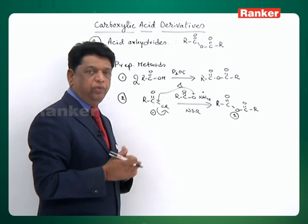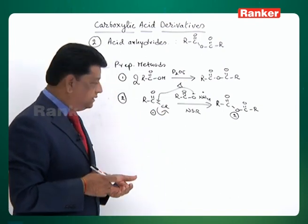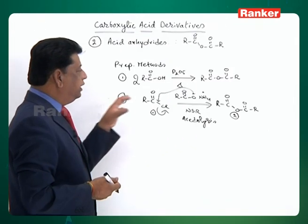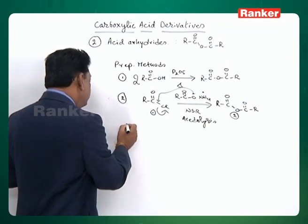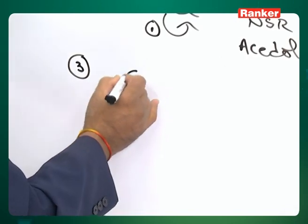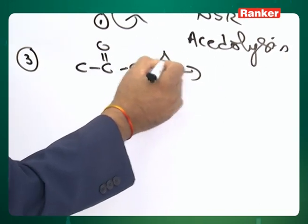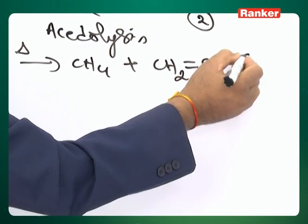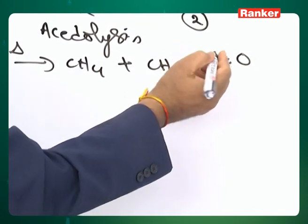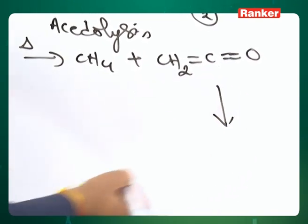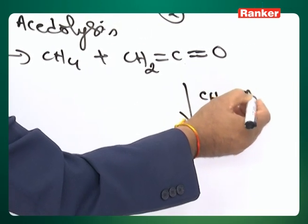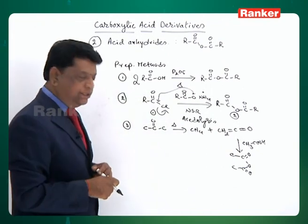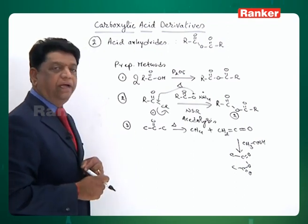Anhydrides may also be formed by a ketene method. Pyrolysis of acetone gives methane plus a CH2=C=O, called ketene. This ketene on addition with another mole of acetic acid commercially gives the anhydride. So pyrolysis of acetone gives ketene, and that ketene on addition with acetic acid gives acetic anhydride.